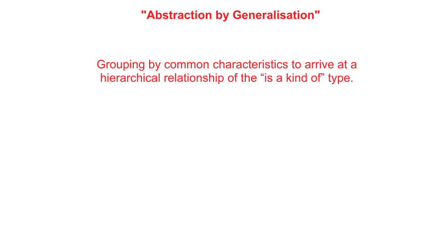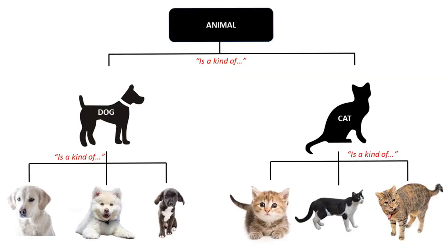Another form of abstraction you need to be aware of is abstraction by generalization. This is the idea of grouping by common characteristics to arrive at a hierarchical relationship — a relationship of the 'is a kind of' type. To explain what we mean, consider this diagram: these three animals here are a kind of dog, and these three here are a kind of cat.